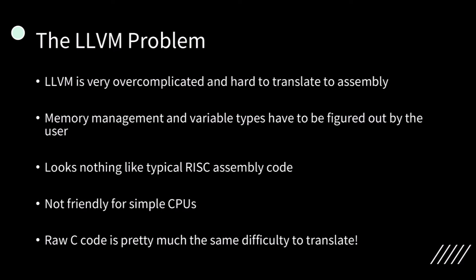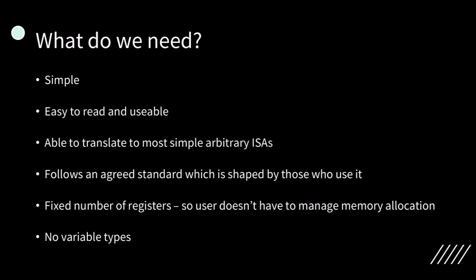So what are the issues with LLVM? LLVM is very overcomplicated and very hard to translate to assembly. Memory management and variable types have to be figured out by the user. It looks nothing like typical RISC assembly code and is not at all friendly for simple, low-level CPUs. Raw C code ends up being pretty much the same difficulty to translate. So what do we need? We need an intermediate language which is simple, easy to read and usable, and is able to be translated into most simple arbitrary ISAs. It needs to follow an agreed standard shaped by those who use it, meaning if we find a feature we dislike or want a new one, as long as enough people want that change, the language can be updated. We also want a fixed number of registers so the user doesn't have to manage memory allocation, and it must have no variable types.